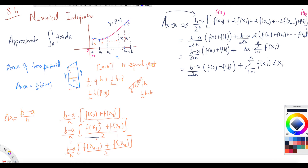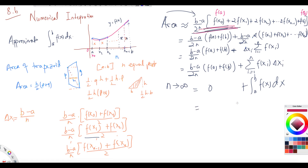As n tends to infinity, the Riemann sum becomes the integral from a to b of f(x) dx, while the term (b − a)/(2n) times [f(a) + f(b)] goes to zero since the numerator is finite and n goes to infinity. So in the limit, the sum equals the integral from a to b of f(x) dx.